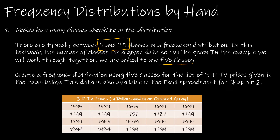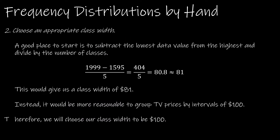We might also tell you the bin width to use. Here we're using five classes. The data is 3D TV prices in dollars in an ordered array — ordered means the lowest price is first and the highest is last. The next thing to consider is the class width. A good place to start is to take the highest value, which was 1999, and the lowest value, which was 1595, and divide by the number of classes — five — giving a bin width of about 81.